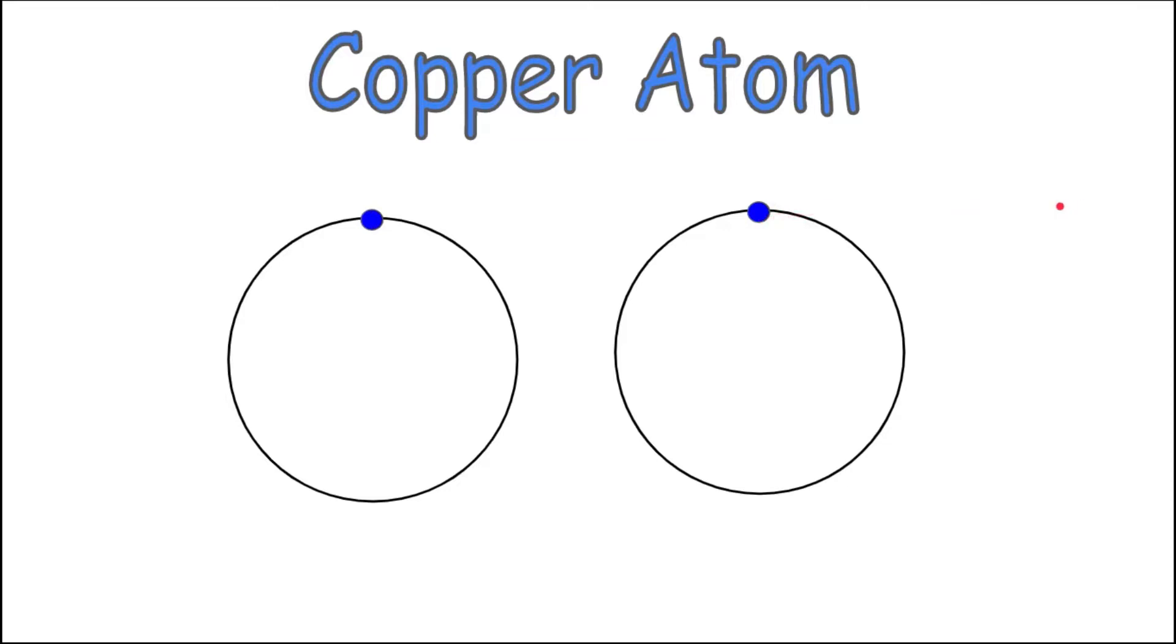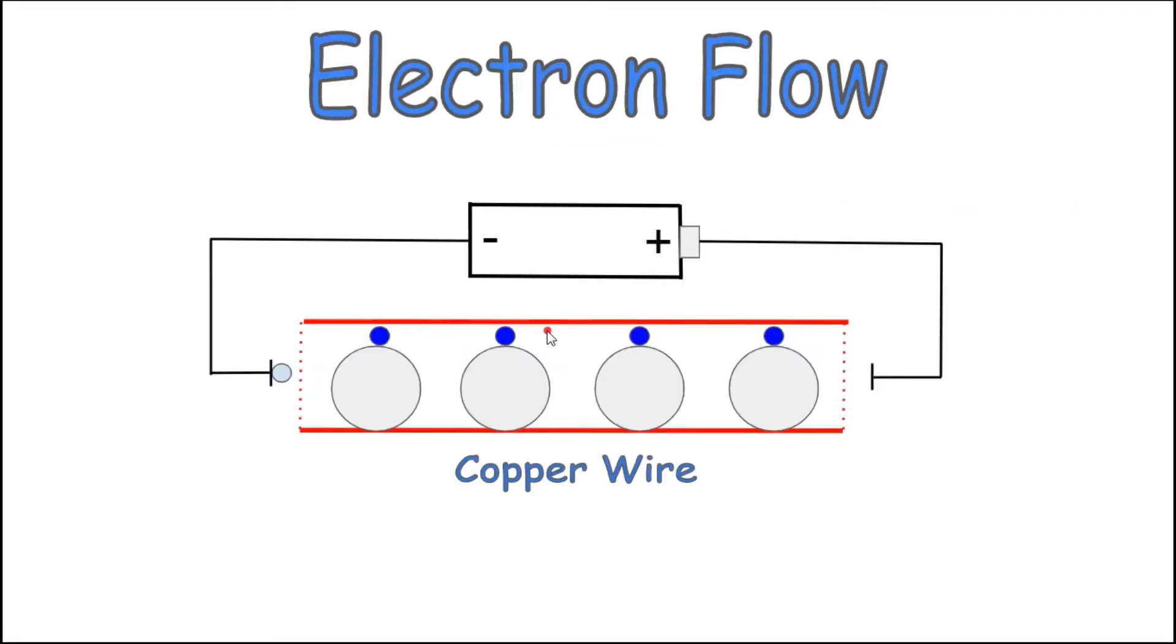Here is an illustration of what happens when a copper conductor is connected to a battery. Assume that there are only four copper atoms in this wire and four free electrons. This is an electron getting ready to be pushed into the wire from the negative terminal of the battery, and this is a positive terminal, which these electrons, which are negatively charged, are attracted to.